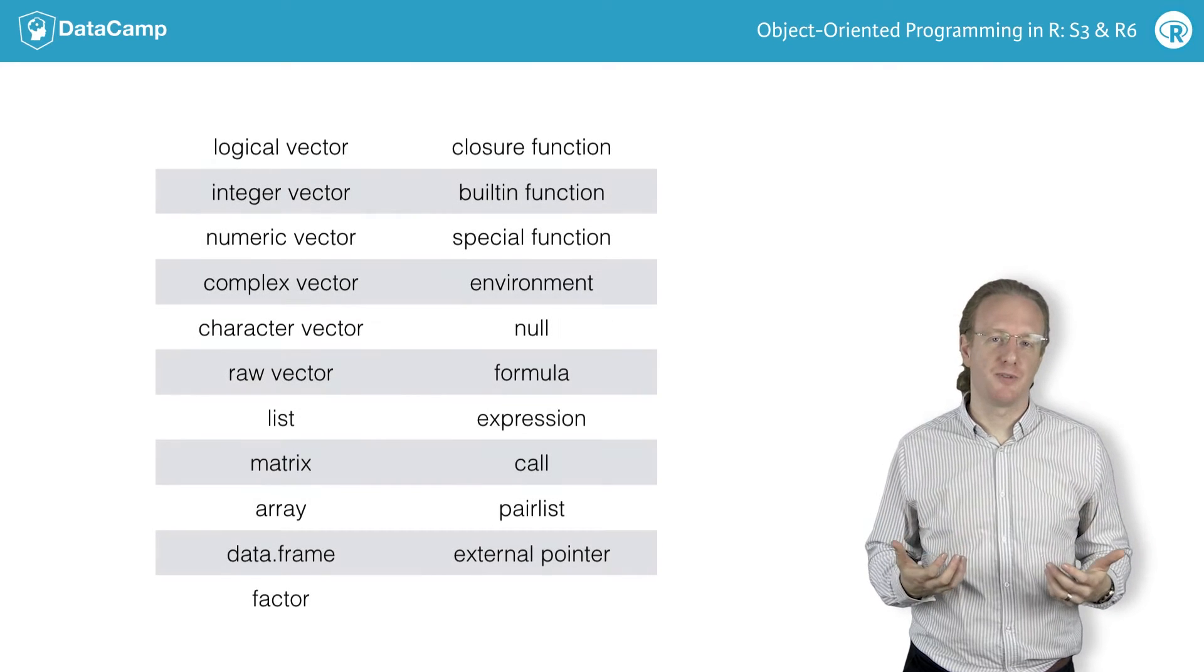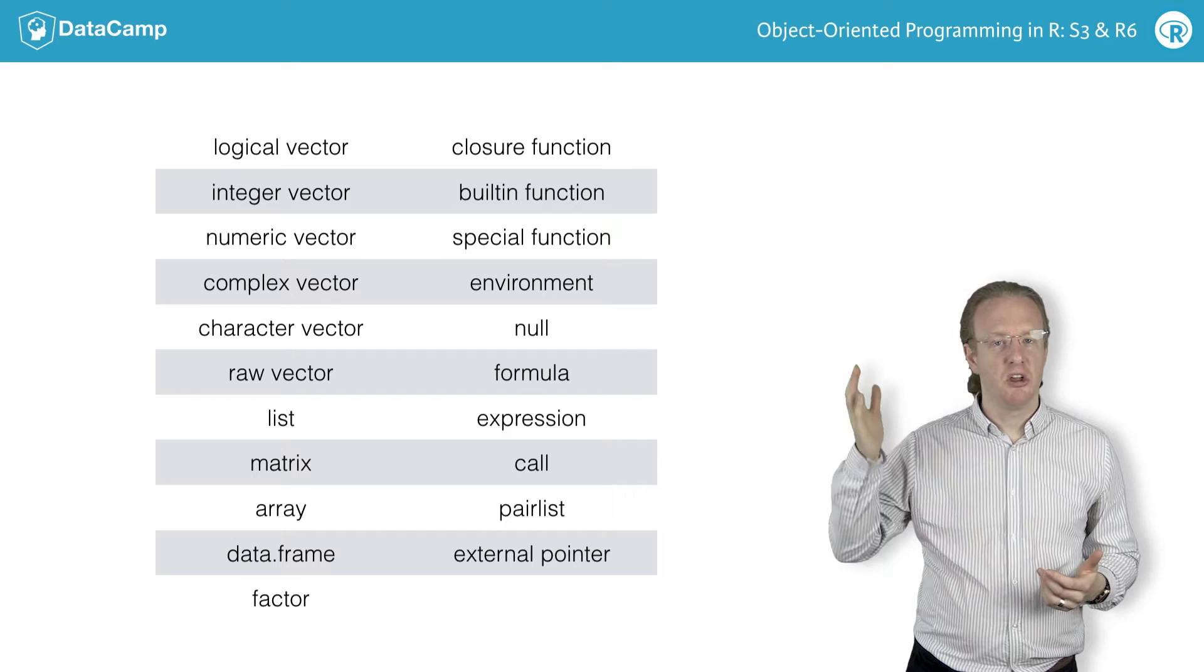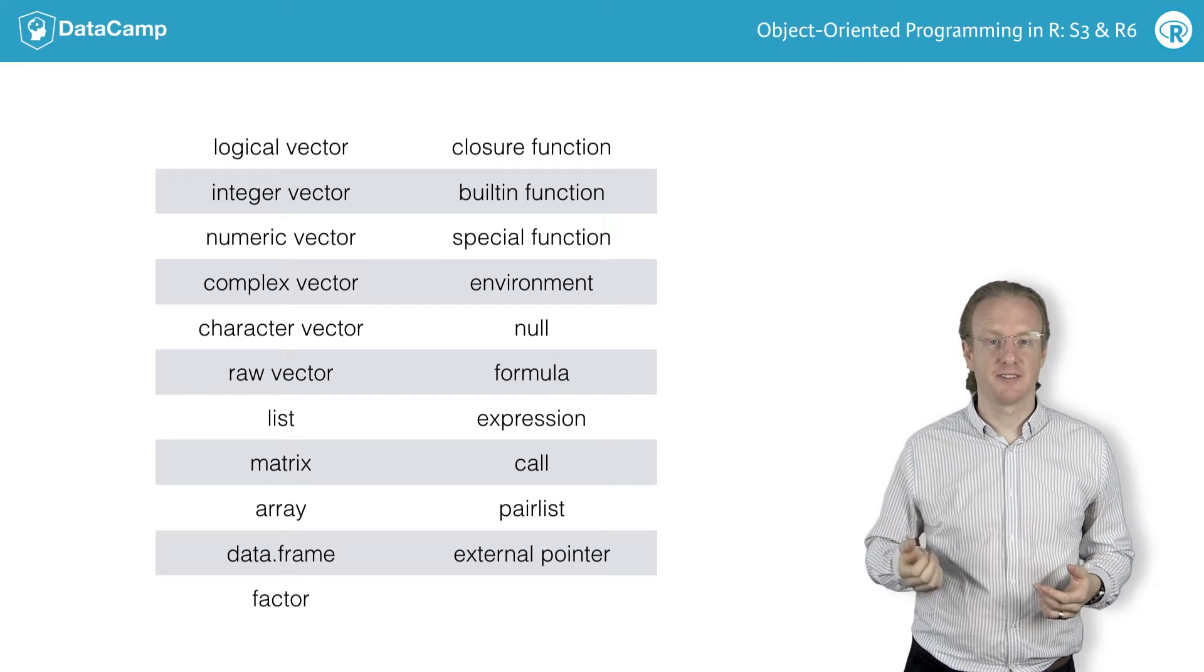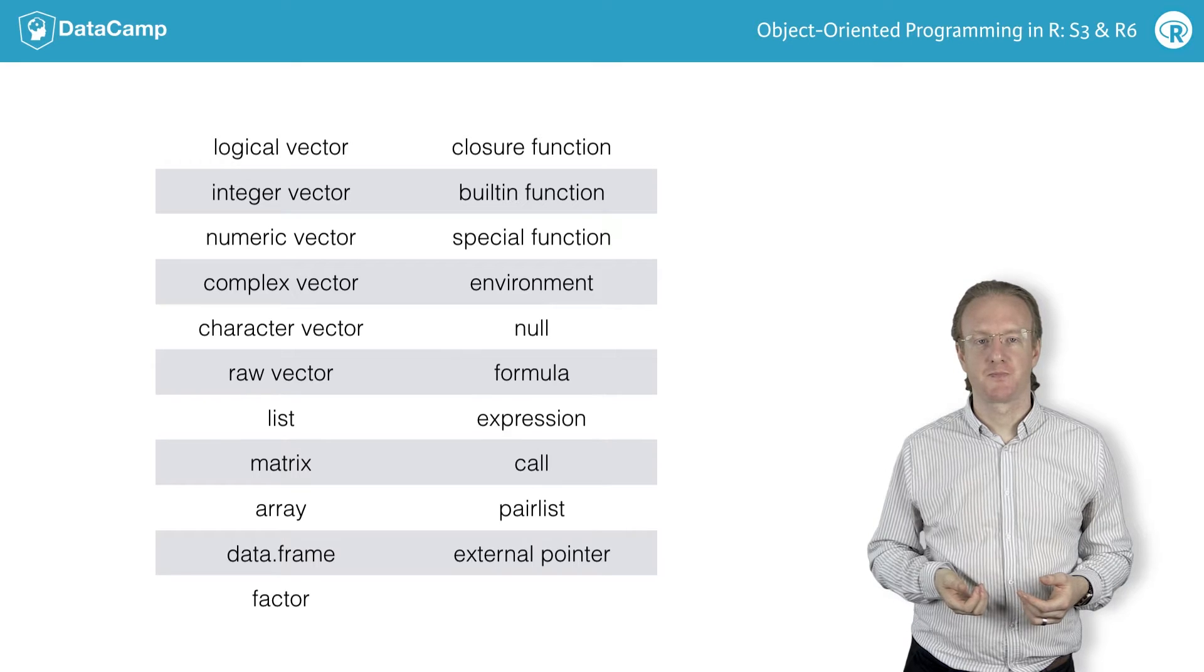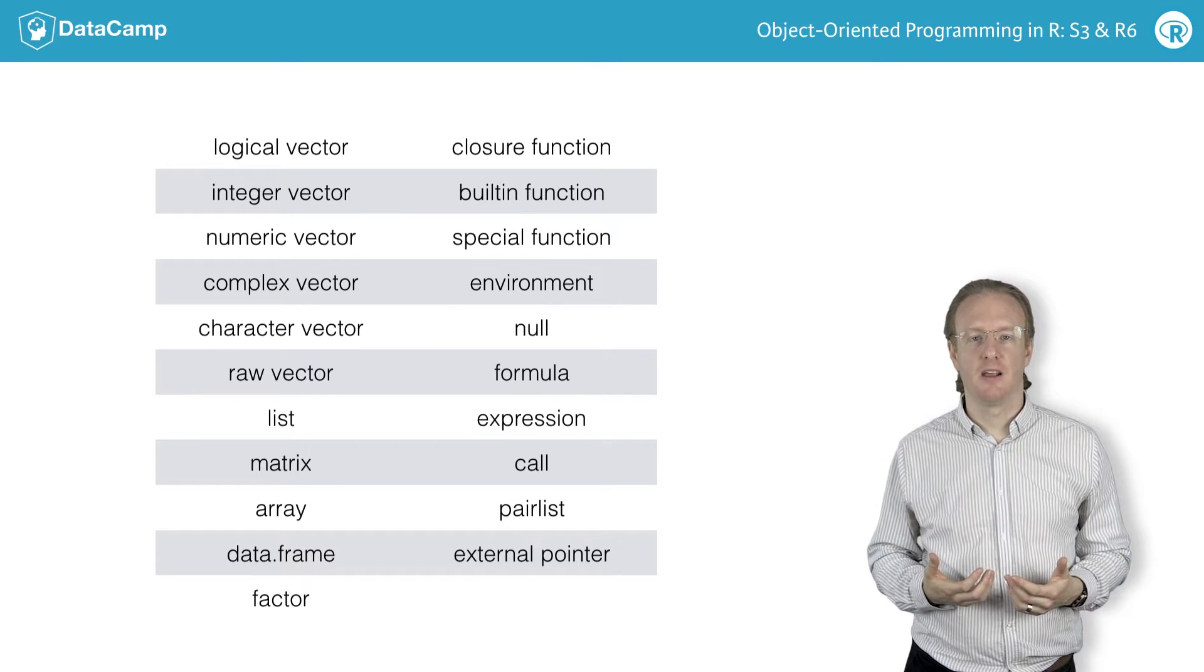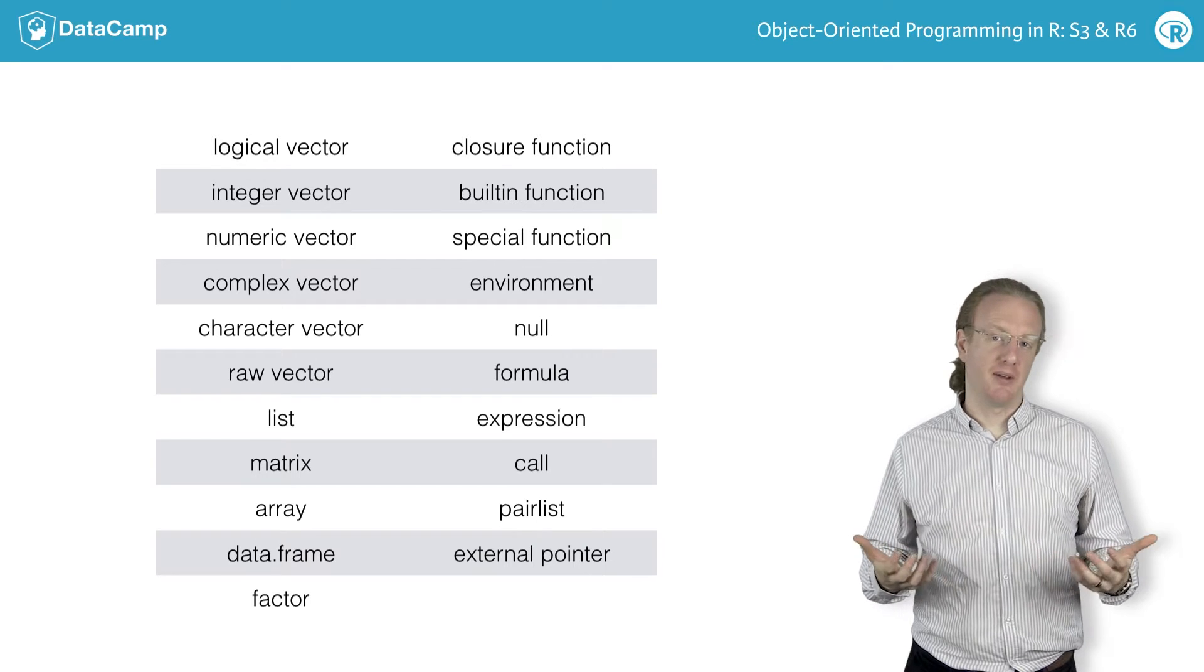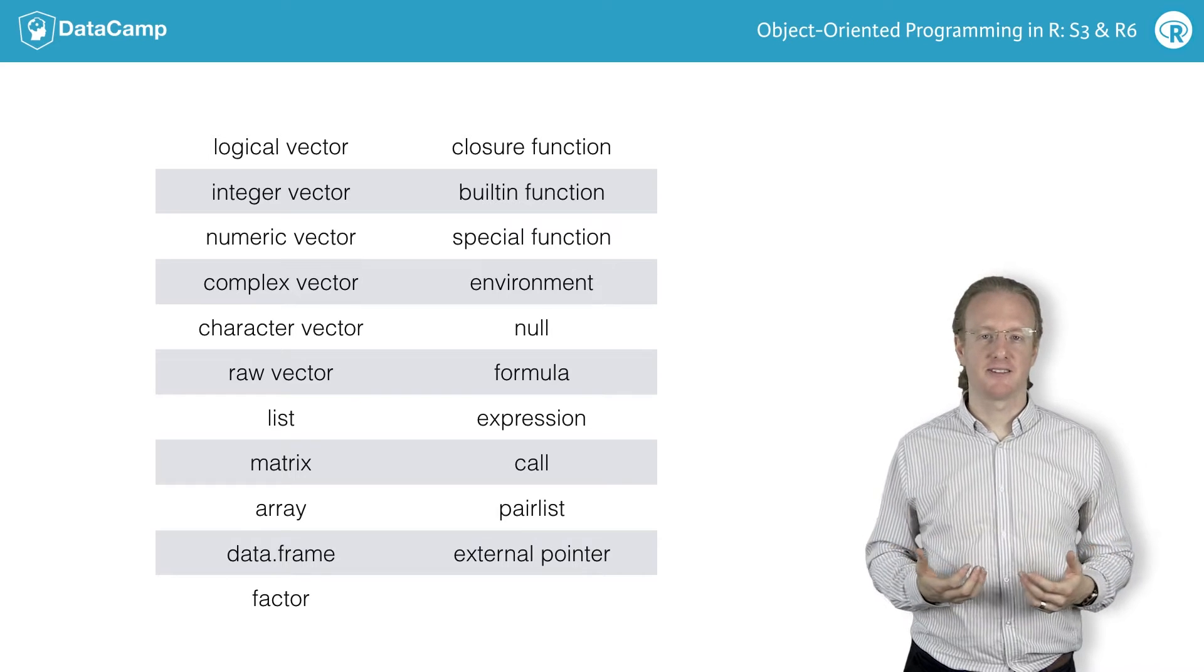You've already come across many of the object types that are available in R. For example, you've seen numeric, logical, and character vectors, as well as factors, data frames, and lists. In total, there are about 20 types of objects available in R. The exact number depends on how you count them. These are all the basic building blocks that you need for data analysis.